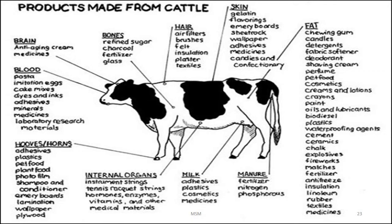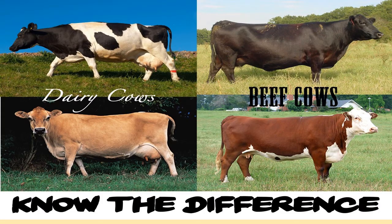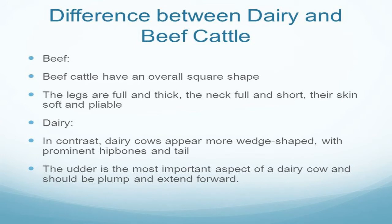Since we are talking about dairy farming, what is the difference between dairy cows and beef cows? The main difference is in the overall shape. Beef cattle are overall square in shape — the legs are thick and full, they are more muscular, and they tend to retain protein on their body. Dairy cows in contrast are more wedge-shaped, they have prominent hip bones and tails, and the udder is the most prominent part. In a beef cow, the udder will not be prominent at all.